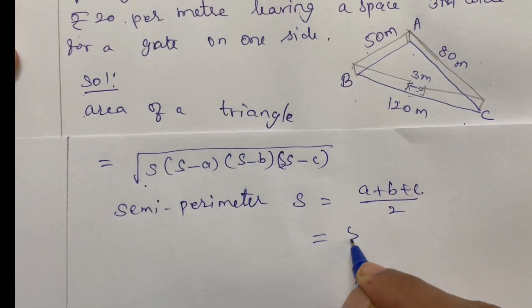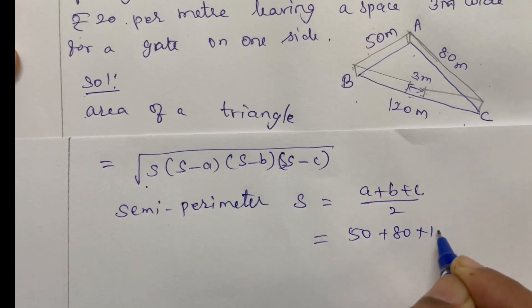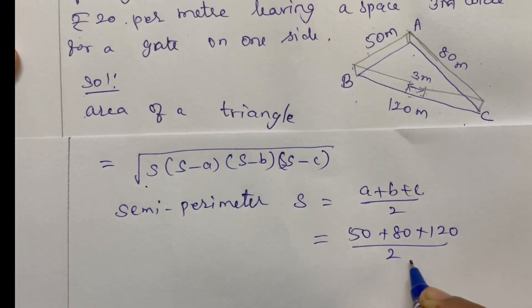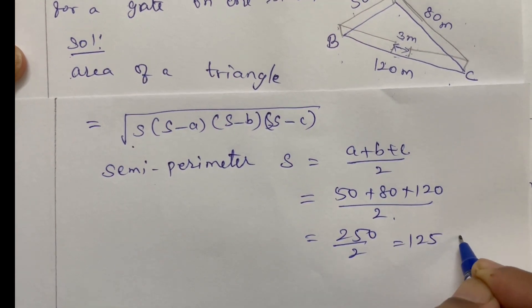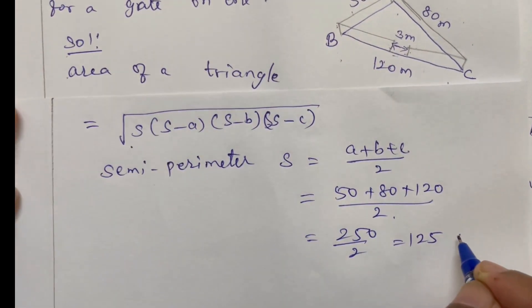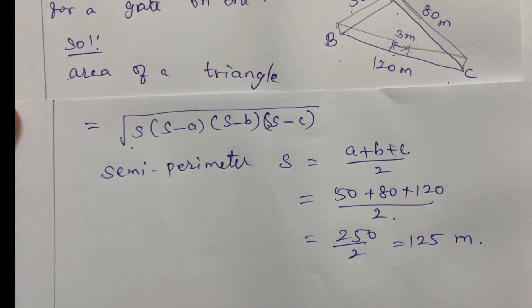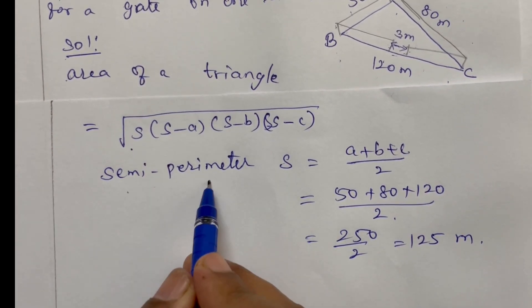Substitute: 50 plus 80 plus 120 divided by 2. So this is 250 divided by 2, it is 125. Given it is in meter, so semi-perimeter is 125 meter.